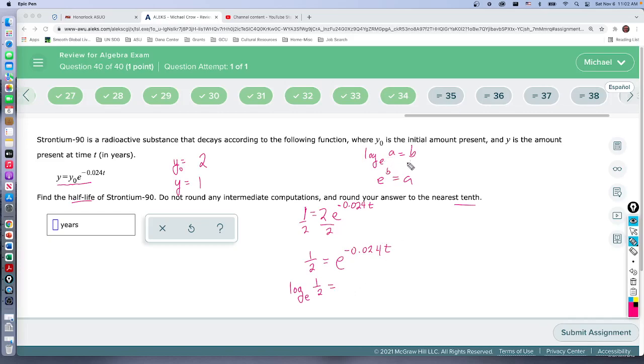Negative 0.024t. And again, this log base e is on the calculator as the natural log of one half. I'm going to do it this way: equals negative 0.024t.